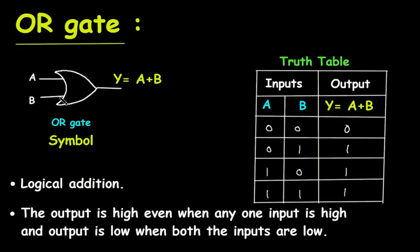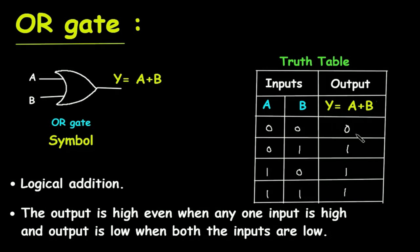OR gate — this is the symbol for OR gate. OR gate has two inputs: A and B are the inputs, and Y is the output. In OR gate, there is a logical addition: Y is equal to A plus B. This is the truth table for OR gate. The output is high even when any one input is high, and output is low when both inputs are low. So 0+0=0, that is low plus low equals low.